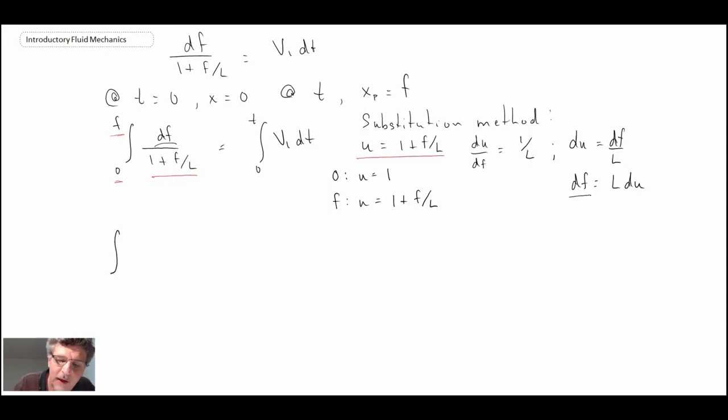So those will be the limits of integral when we make the substitution. So what we have, we have integral from 1 to 1 plus f over l. du over u is equal to integral 0 to t. This is an easy integral to evaluate. It basically works out to be, you can pull v1 out. And we have v1 t minus 0. So that is equal to v1 t. So the right-hand side is easy.